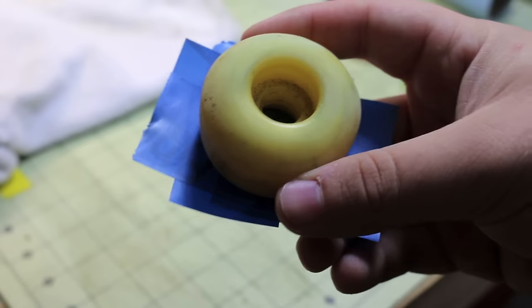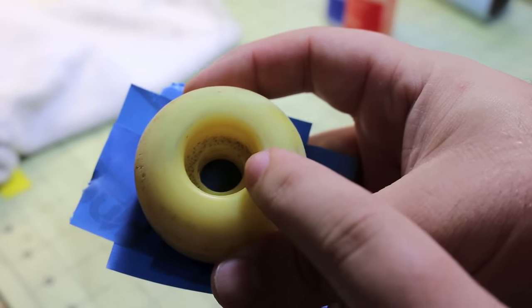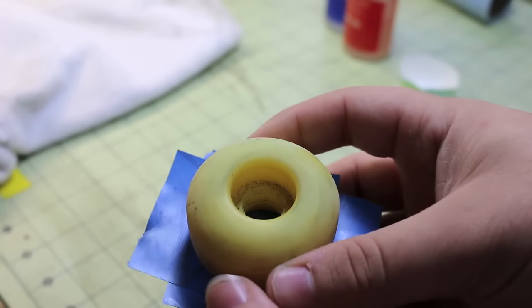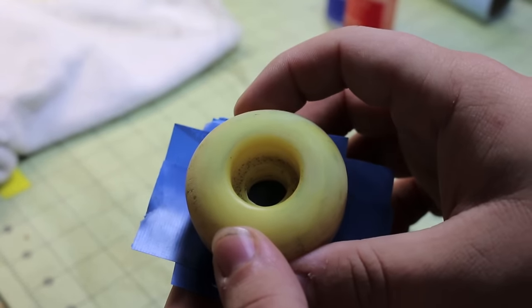The way I'm gonna attach the rod to this is I'll fill a small layer of epoxy in the wheel, which is why I have this tape on it. And then once that cures, I'll add the rod and fill the rest up with epoxy. Hopefully that'll hold it good enough.